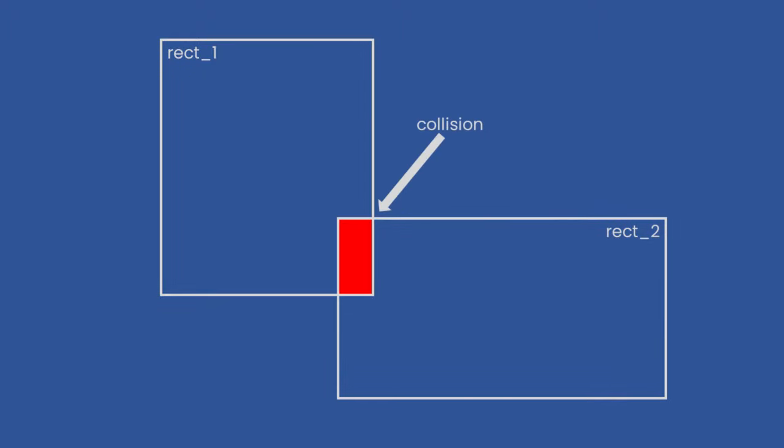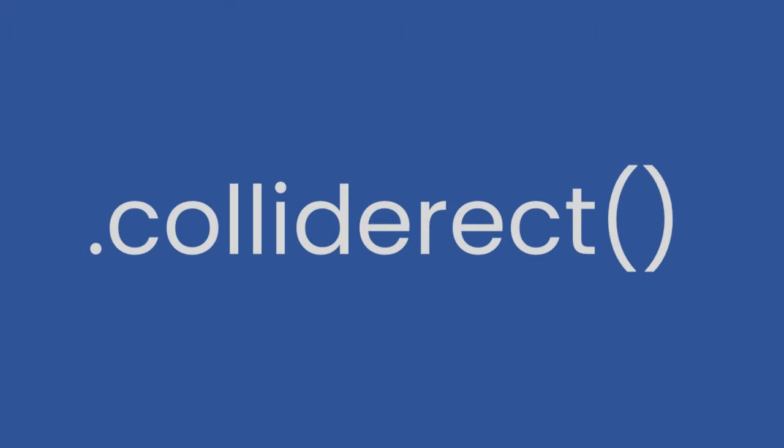Detecting a collision is a case of checking to see if any of the edges between two rectangles intersect. This will result in an overlapping collision region. Luckily we don't have to do this manually, as Pygame has a built-in method for checking for collision between rectangles — the collide_rect method.